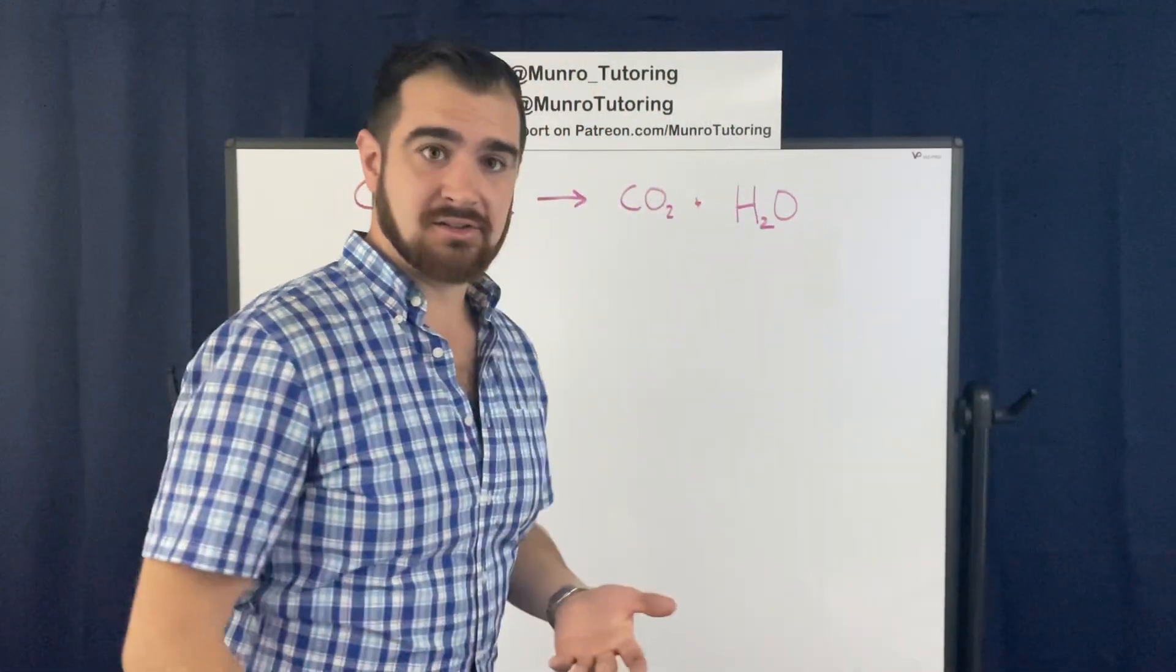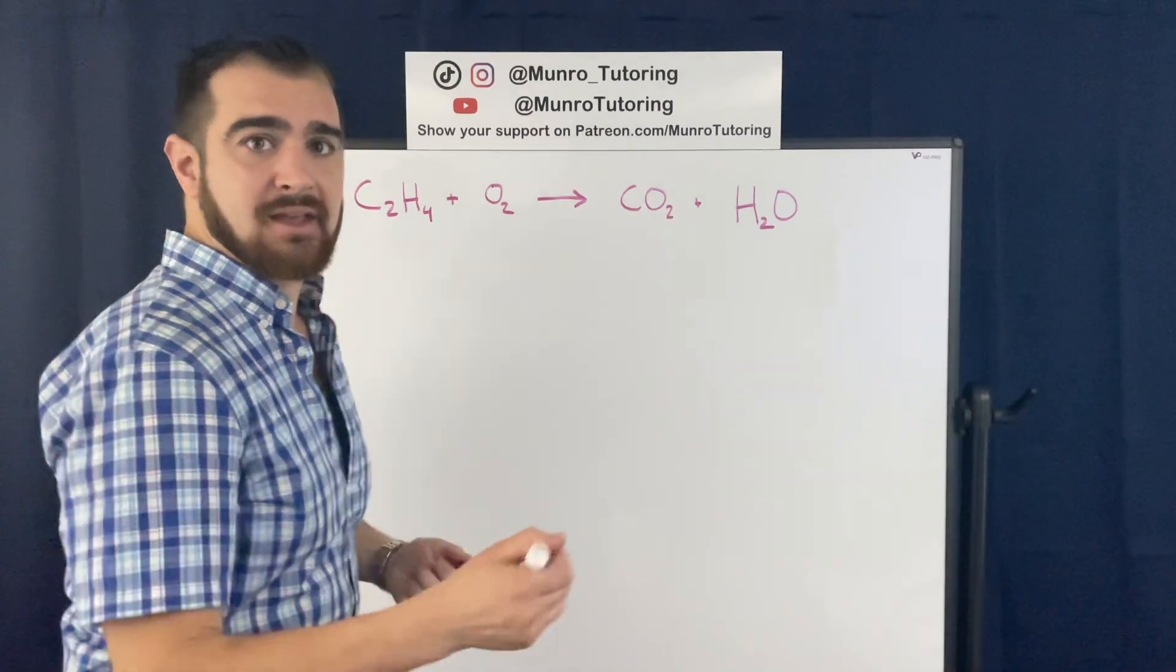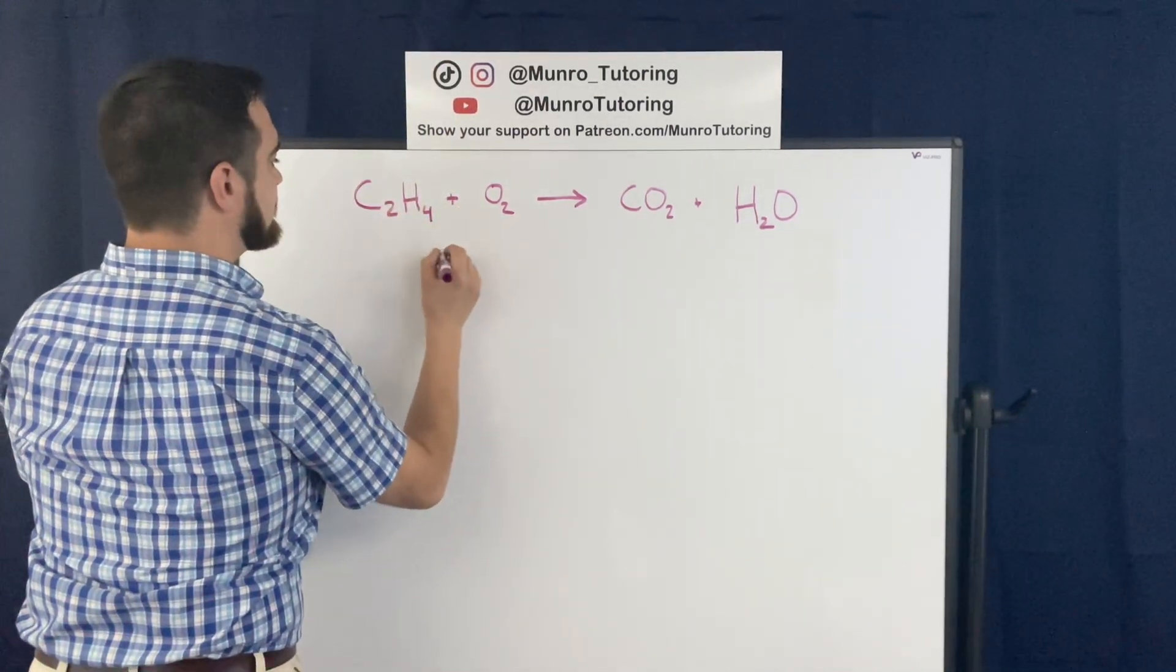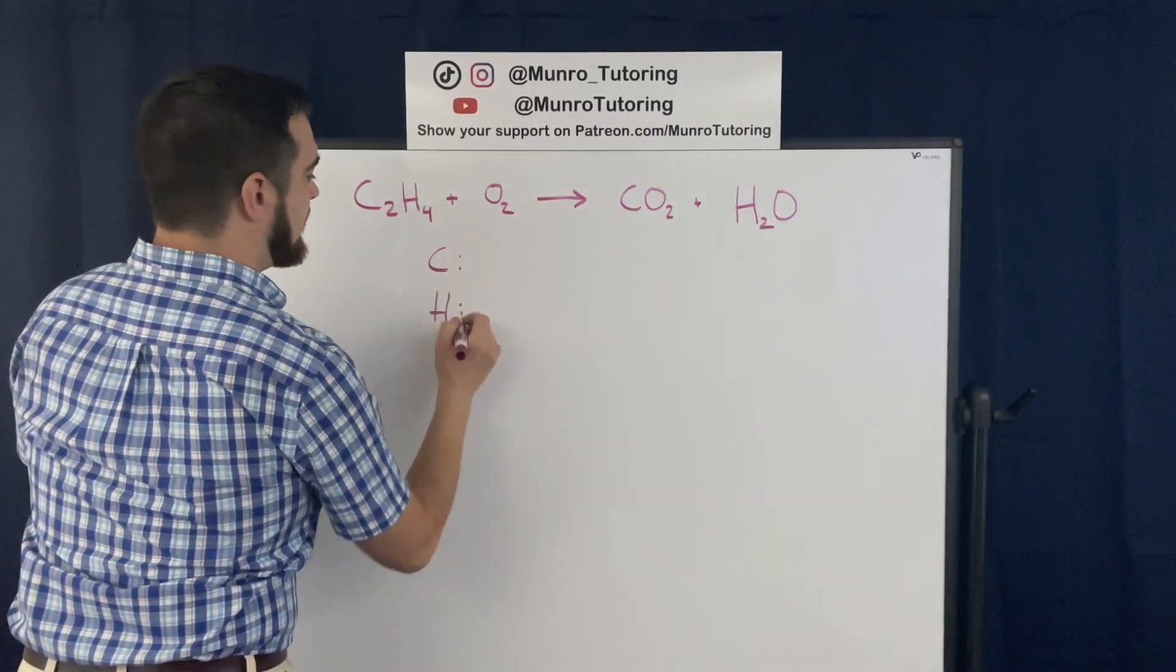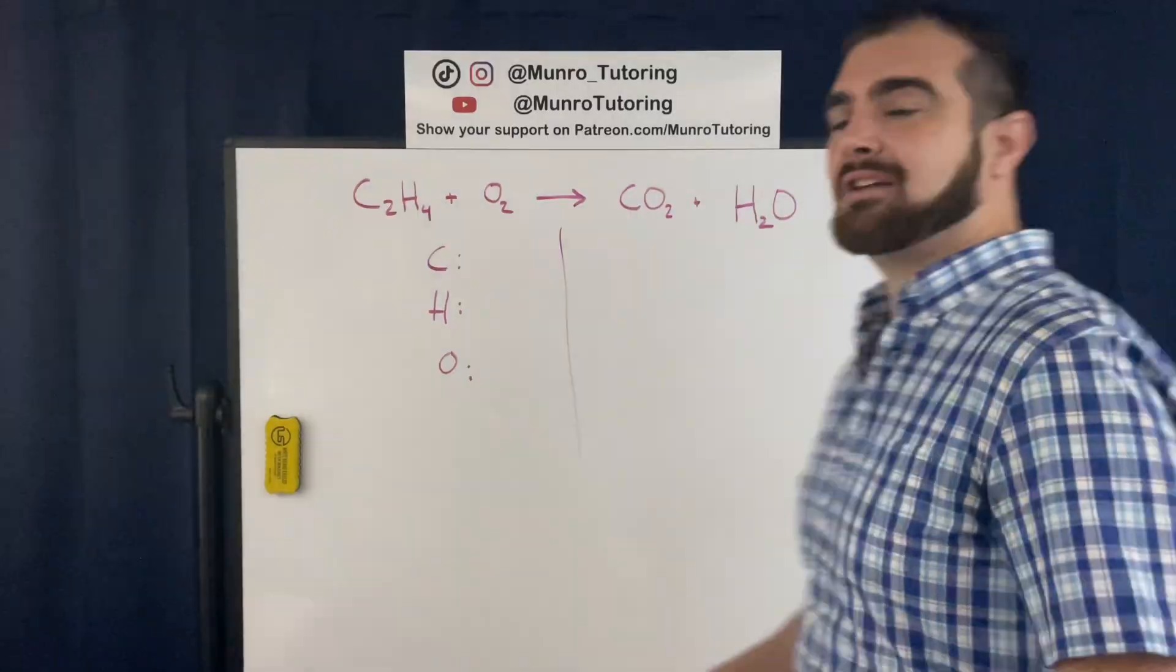So what I like to do is I look at the way that the elements are written on the reactant side, and I list them off. So we have carbon, hydrogen, and oxygen. So I'm going to just go carbon, hydrogen, and oxygen, and I'm going to count how many there are on this side of the reaction.